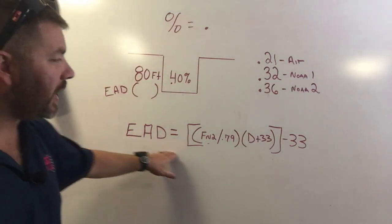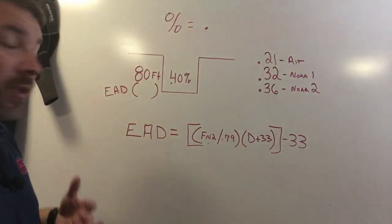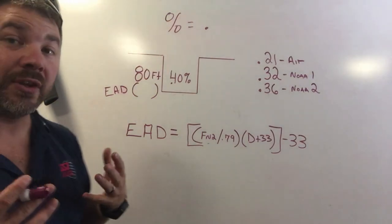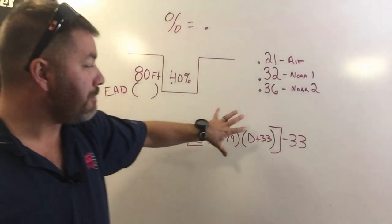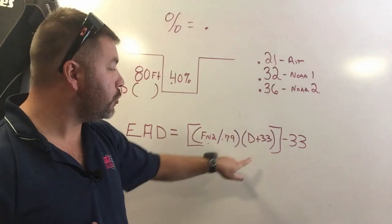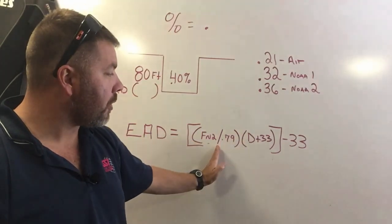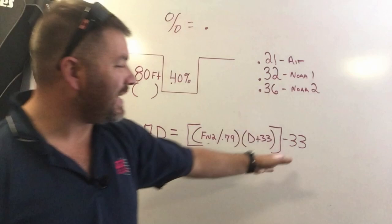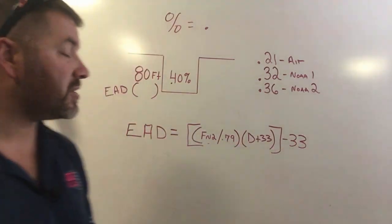The equivalent air depth equation is simple to memorize. There's actually three parts to it. We have a bracketed section that has two parentheses, so we're going to call this part one, this is part two, and then part three is anything outside the bracketed section.